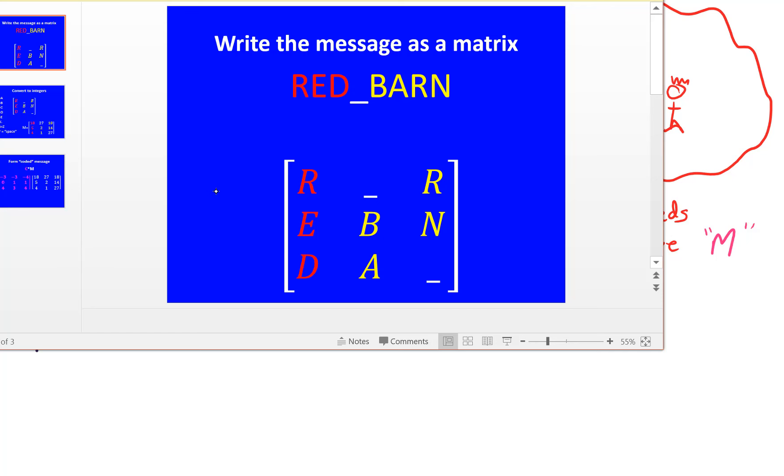So I'm going to write those words in a matrix with three rows. Red will be in the first column, then space, B, A, and the third column will be R, N, space.